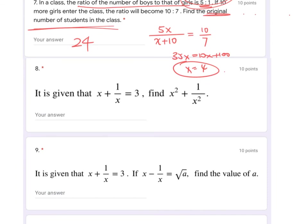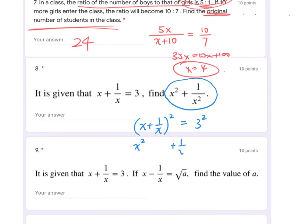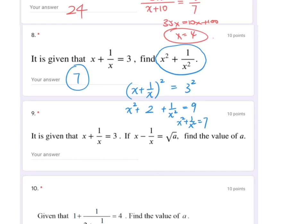Number eight is the most interesting question. The challenging part is finding x² + 1/x² without solving for x directly (x would be a very ugly surd). If you square (x + 1/x), you get x² + 2·x·(1/x) + 1/x² = x² + 1/x² + 2. The middle term 2 is free from the variable, and the right-hand side becomes 9. Moving 2 to the other side gives x² + 1/x² = 7.